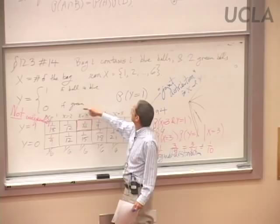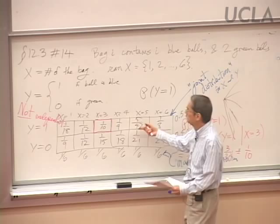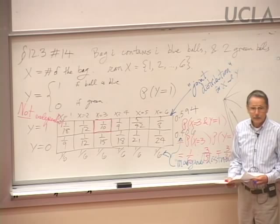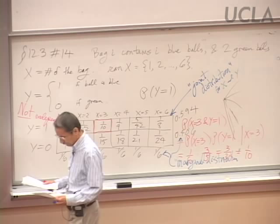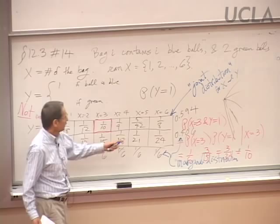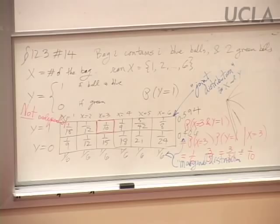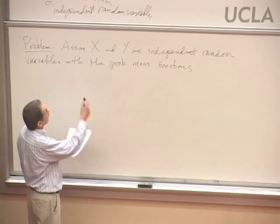If X is small, you have a bag with very few blues, which reduces the chances that Y is going to be 1. To verify with probabilities: to be independent, there are 12 equations that would have to hold, and they all break down. The probability that X equals 1 and Y equals 1 is 1/18, which is not 1/6 times 0.6 — it's much smaller. In this new problem, we're told X and Y are independent.